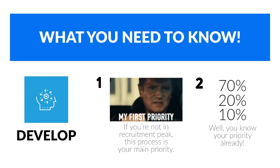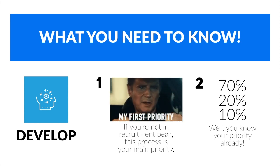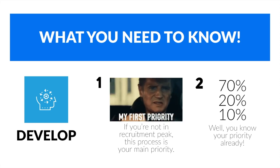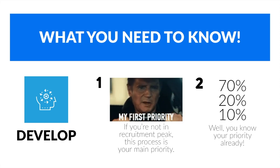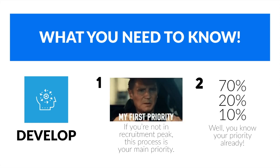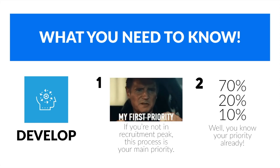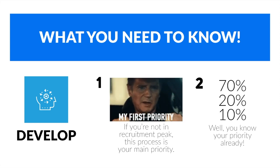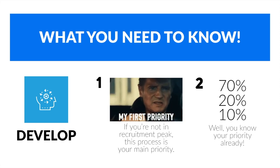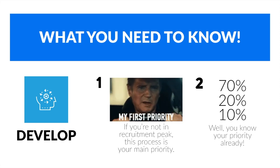When implementing the develop phase, if we're not in a recruitment peak, the develop process is our main priority. The get phase is very timeline-bound, but as soon as we're not in a recruitment peak, develop becomes our main priority. A good case practice is using the onboarding phase to transition into develop — using those last 10 days of the get phase to introduce things like personal development plans for a more seamless transition. The 70-20-10 emphasis split helps us clearly see where the priority is.